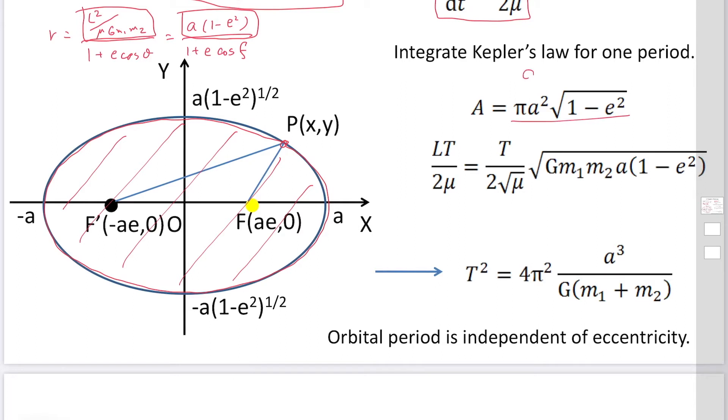Then the area becomes the area of the total ellipse. It can be calculated πa²√(1 - e²).